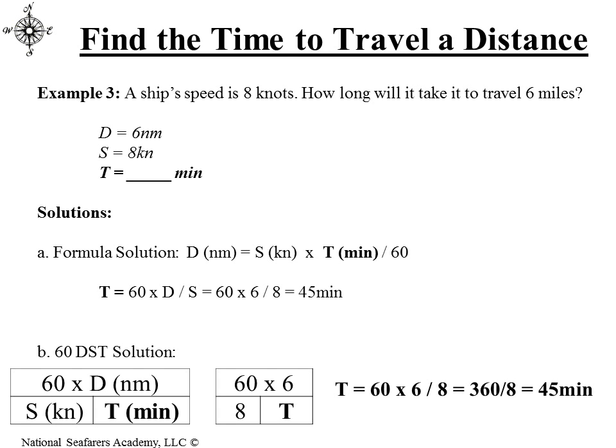In this question, we find the time it takes to travel a certain distance. If the ship's speed is 8 knots, how long would it take to travel 6 nautical miles? Distance equals 6 nautical miles, speed is 8 knots. Formula solution: time equals 60 times distance divided by speed, so 60 times 6 divided by 8 equals 45 minutes. Using the 60 DST table: time equals 60 times 6 divided by 8, which is 360 over 8, or 45 minutes. Most problems work out nicely when using minutes.